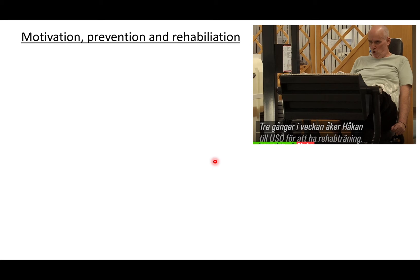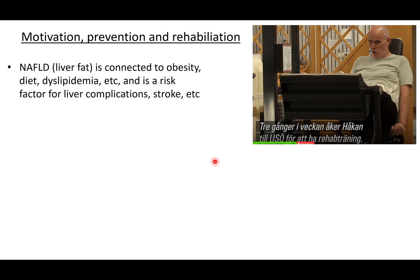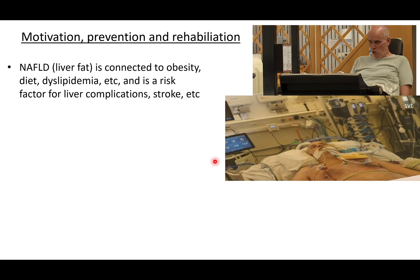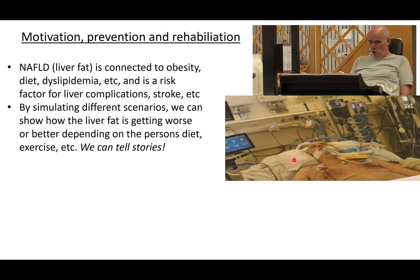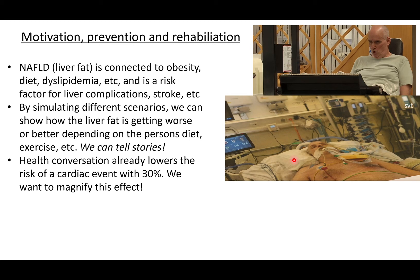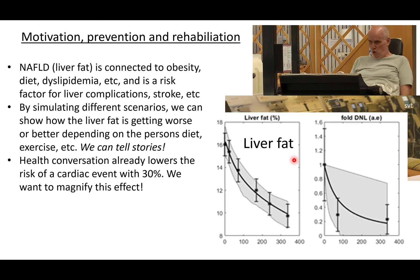For instance, we want to tell these stories to motivate people to do more prevention and rehabilitation. One example is non-alcoholic liver fat, which is a risk factor for COVID-19, connected to obesity and poor diet, and also a risk factor for stroke. Here we see a COVID-19 patient during rehabilitation and acute treatment. We can simulate different scenarios to show how liver fat gets worse or better depending on diet or exercise, and use this to tell stories. This type of conversation with patients has already been shown to lower the risk of a cardiac event by 30%, and we want to magnify this effect by also showing the digital twin.